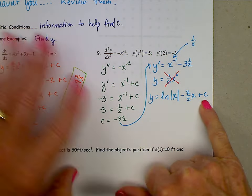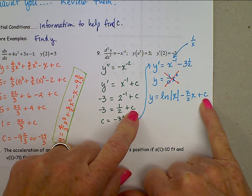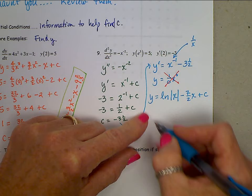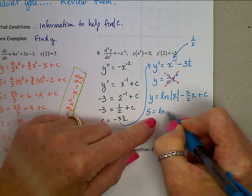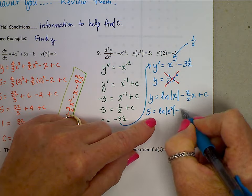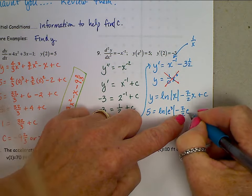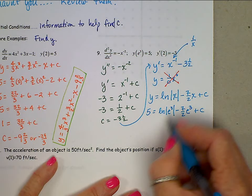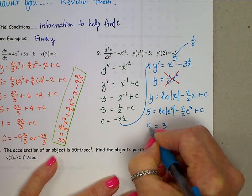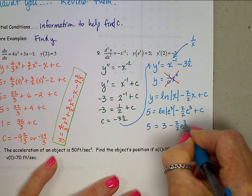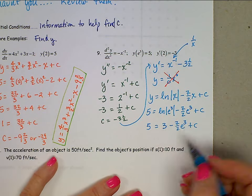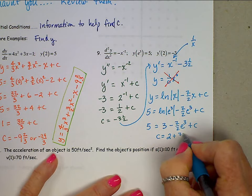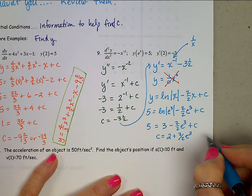That c, not the same as this c. It could be the same numerically, but more than likely not. Let's substitute in, we have y of e cubed is 5, so 5 is the natural log of absolute value e cubed, minus 7 halves e cubed plus a c. Natural log of e cubed is just 3. Pre-calculus. Log's coming back. Solving for c here, c is going to be 2 plus 7 halves e cubed, and that's it. There's c.